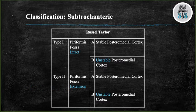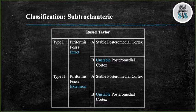The Russell Taylor classification is the most widely accepted classification and was used to determine which nail could be used. Type 1 is defined as having an intact piriformis fossa; Type 2 is defined as having the fracture line extending into the piriformis fossa. Subtype A states that there is a stable posterior medial cortex, and Subtype B states that there is an unstable posterior medial cortex. Type 1B will have a greater varus stress than 1A since there is a lack of intact medial cortical bone.